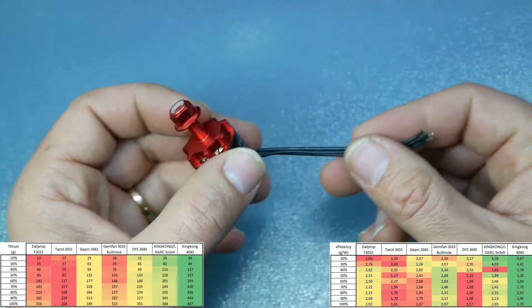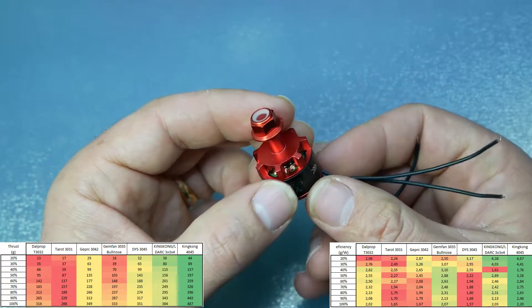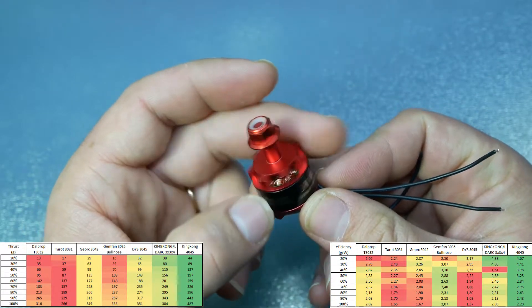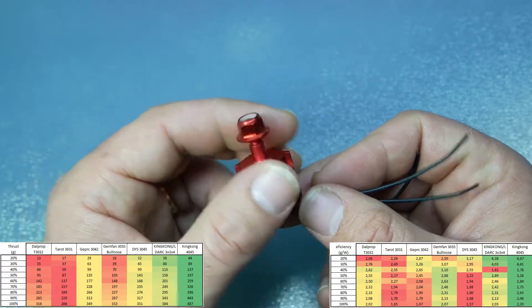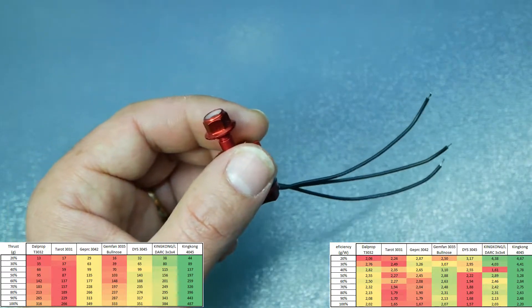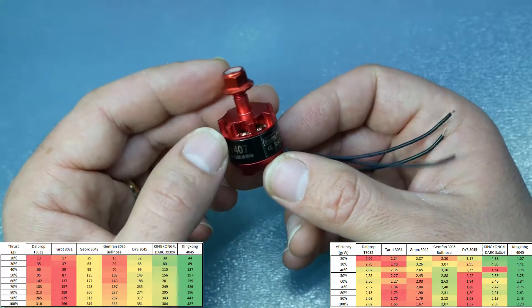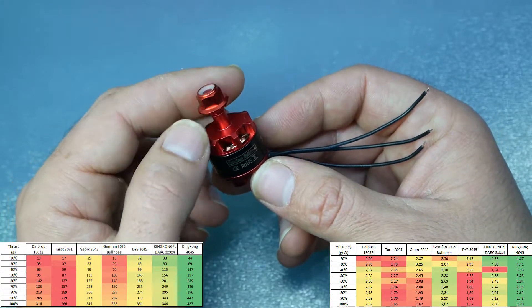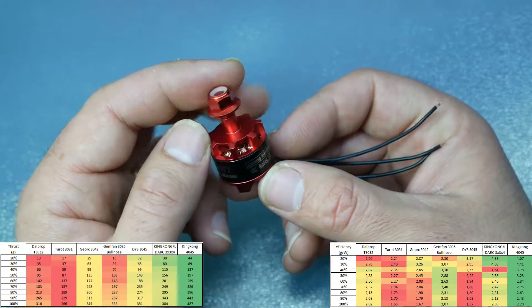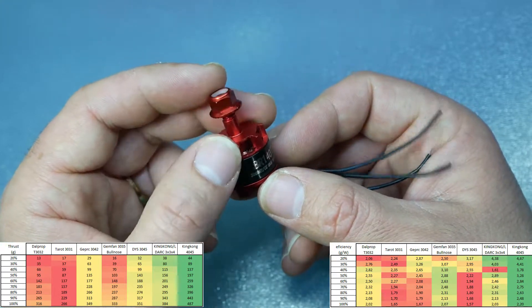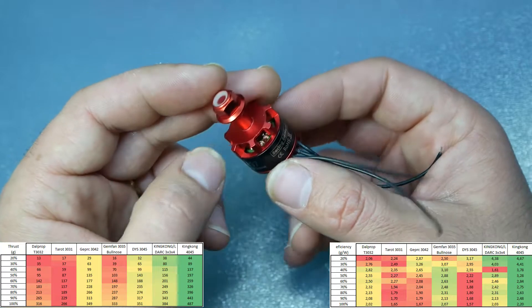The results achieved with this motor: it can deliver 500 grams with 4-inch propellers. With 3-inch props, the most I could achieve was 384 grams with the King Kong 4-blade propeller. The consumption was 12 amps, so good consumption for the motor.